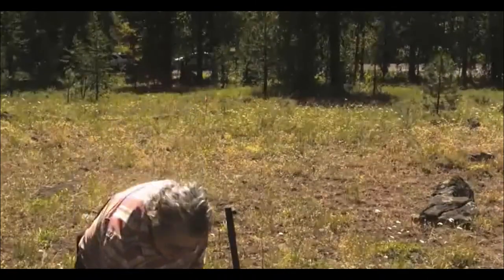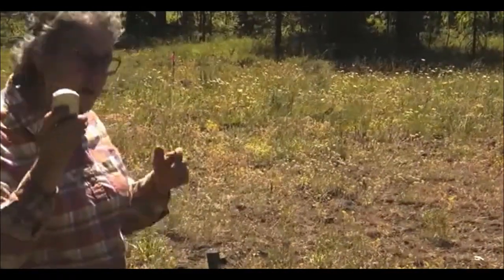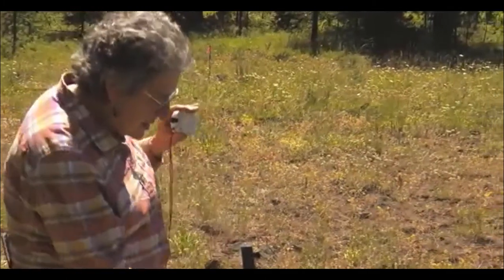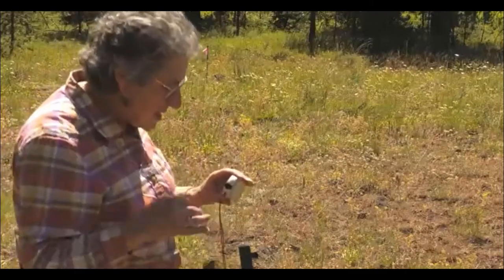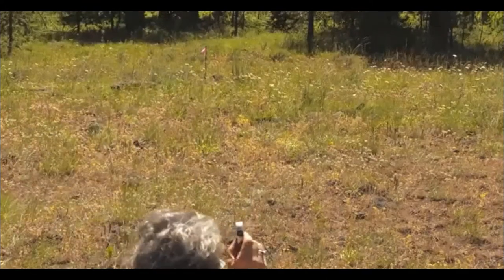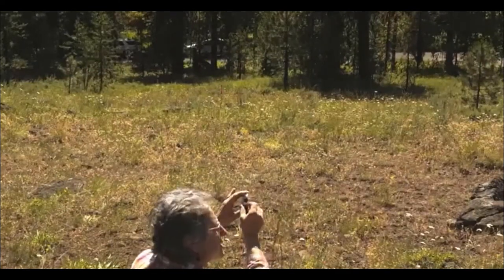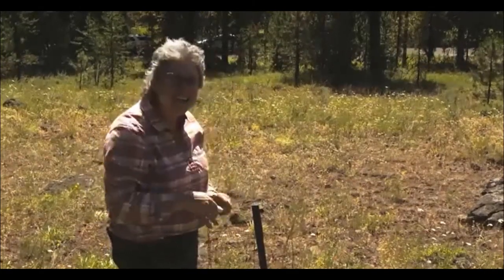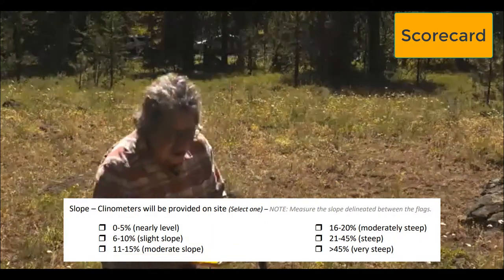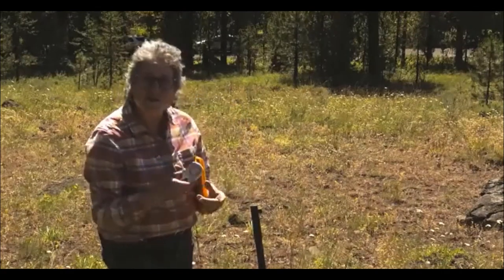To measure slope, you use a clinometer, which measures how inclined or declined a surface is. You can use it from either the bottom to the top or the top to the bottom. We'll have clinometers and compasses by the stakes for you, or you can bring your own. You look from one stake to the top of the other, read the slope in the clinometer, and then record the category that best describes that slope on your score sheet. Check the tips and tricks section for details on how to use a clinometer.